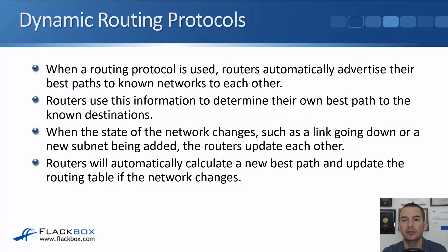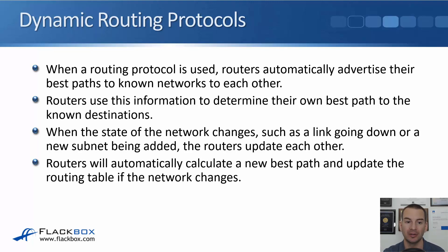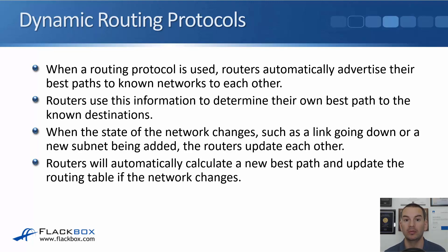In this lecture, you'll learn about the basics of dynamic routing protocols and how they compare to using static routes. When a routing protocol is used, routers will automatically advertise their best paths to known networks to each other. Routers will then use this information to determine their own best path to those known destinations. And if the state of the network changes, like if a link goes up or down or if a new network is added to the topology, then the routers will automatically update each other with that information. Routers can use that information to automatically calculate a new best path and update their routing table in accordance with those network changes.